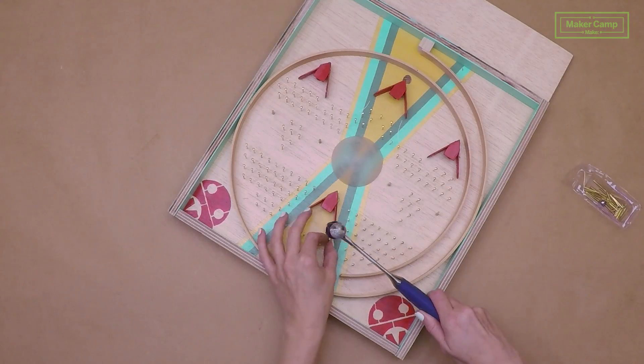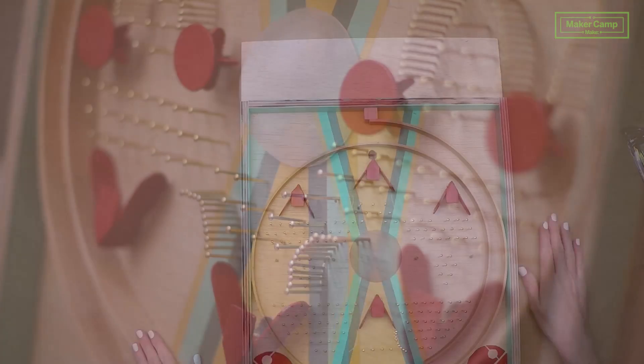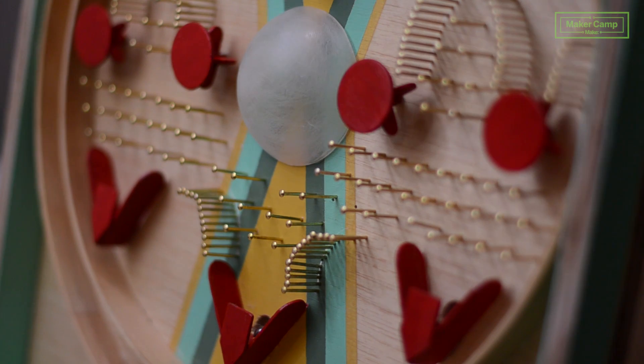For the nail curves, you basically just follow along the line and nail in your nails right next to each other. These curves act as a guide for your ball to go into the winning pocket.